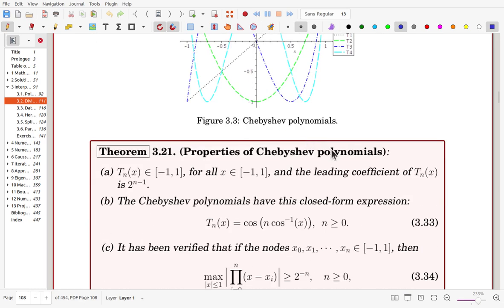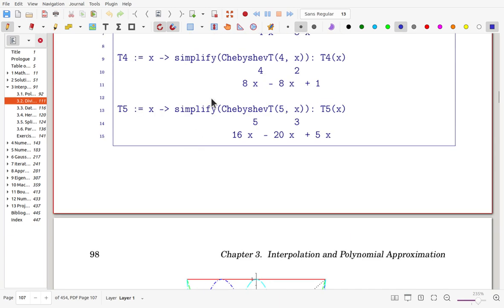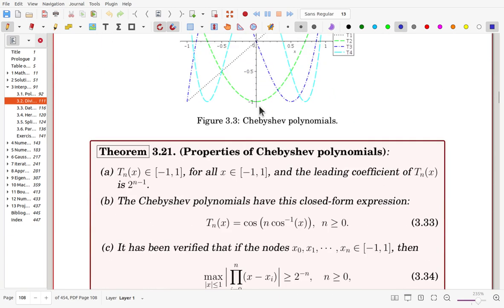Here we see properties of Chebyshev polynomials in theorem form. Tn of x, the values are always minus 1 to 1 for all point x, and leading coefficient of Tn is 2 to the n minus 1, we saw from here.